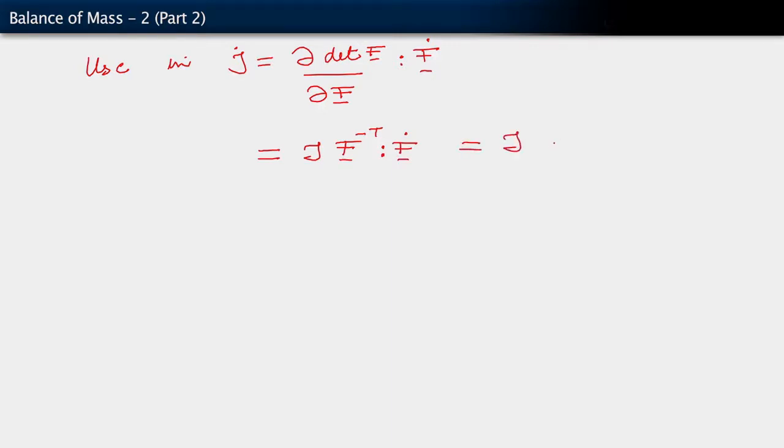Coordinate notation. F inverse transpose, remember, f inverse transpose is simply the transpose of f inverse, right? So we have f inverse here. I'm going to write its indices here as capital I, little i. And this has to be multiplied by f dot, which has indices little i, capital I.